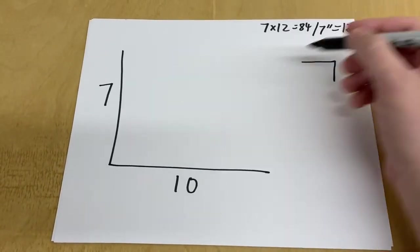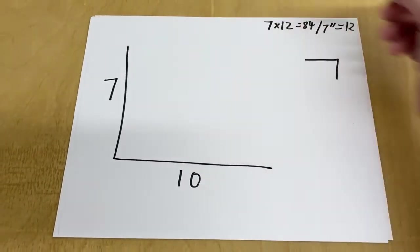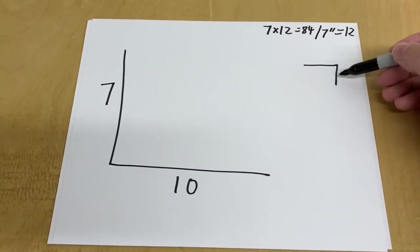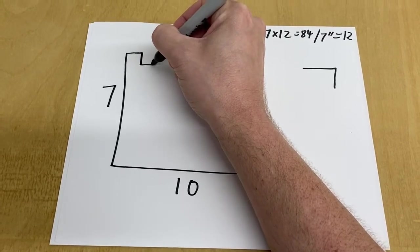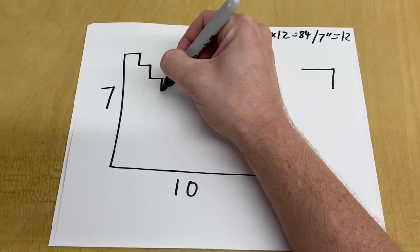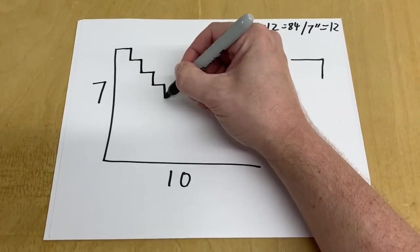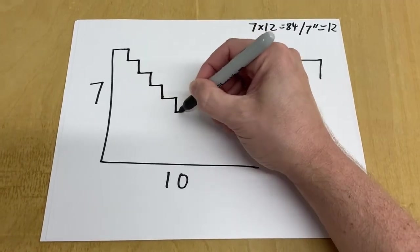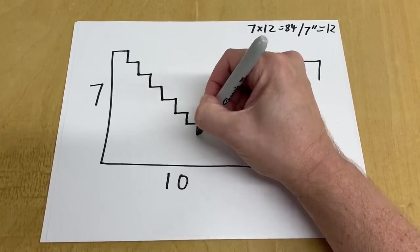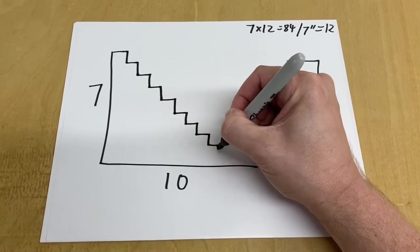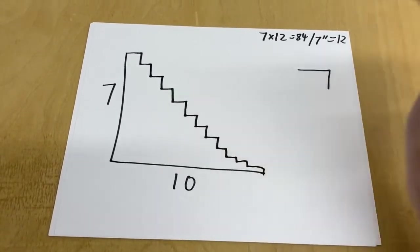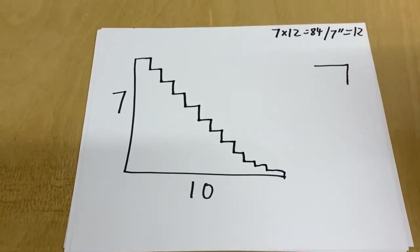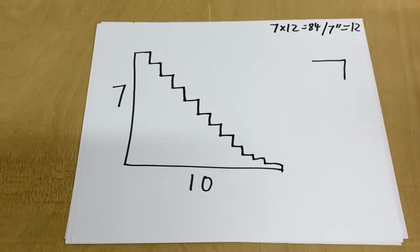So that means that there needs to be 12 rises here, which is this one here. So we're just going to count 1, 2, 3, 4, 5, 6, 7, 8, 9, 10, 11, 12. Okay, there we go. This is just for diagram purposes. You guys get the point.